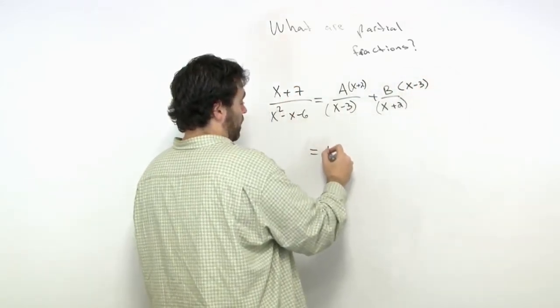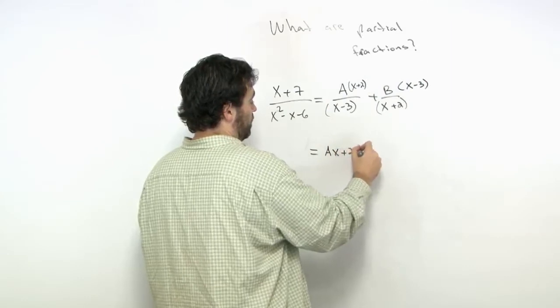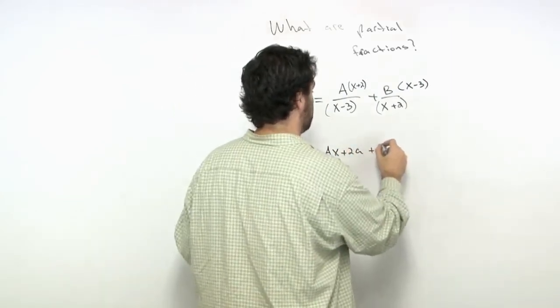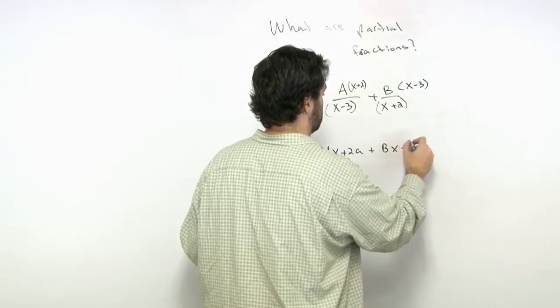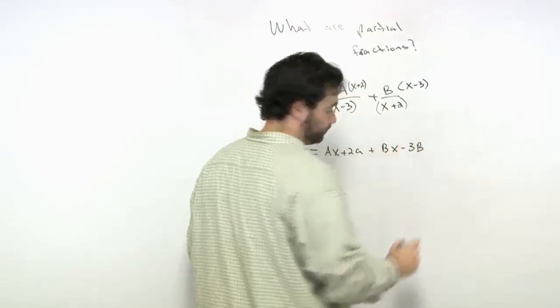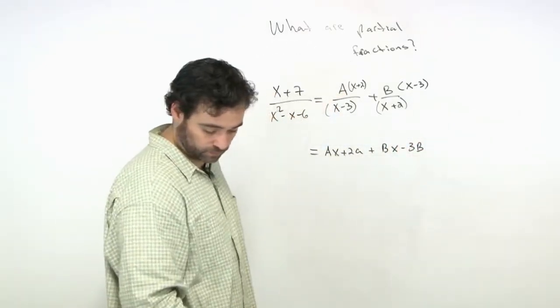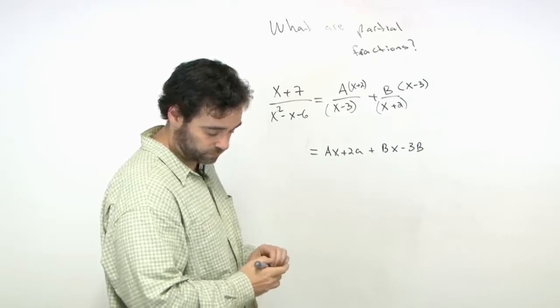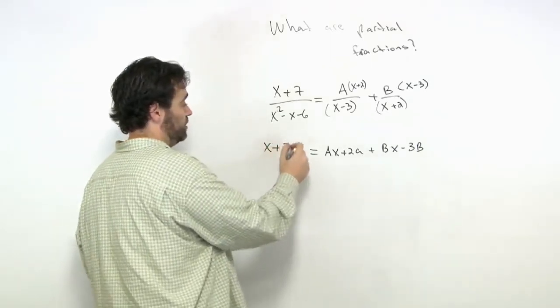We get Ax + 2A here, and Bx - 3B here, which equals x + 7.